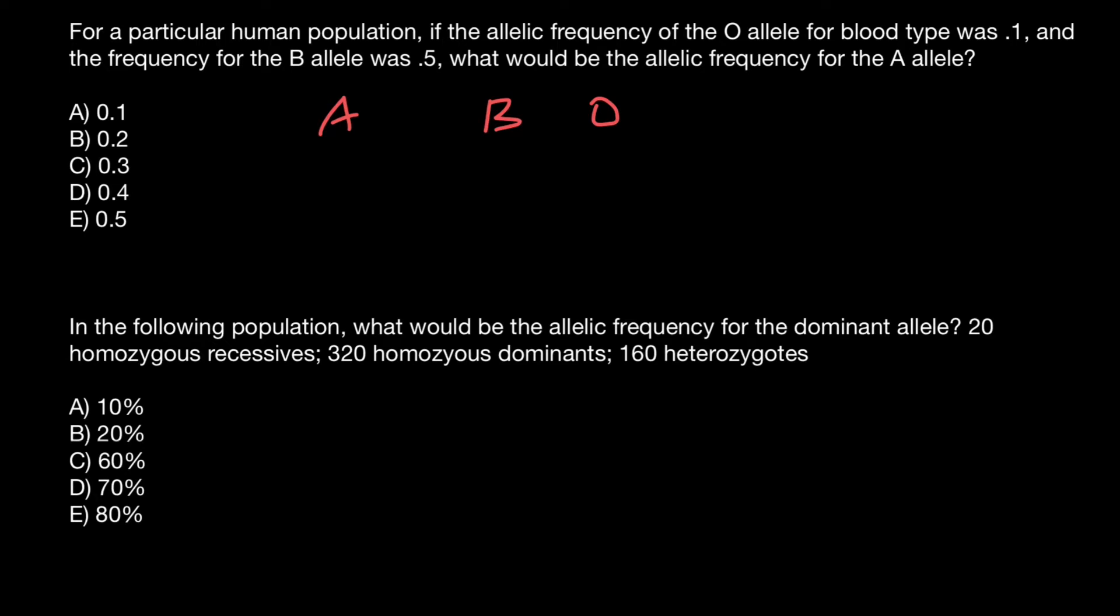If we know the frequency of two alleles, we will find the frequency of the third allele. The frequency of the O allele is 0.1, and frequency of the B allele is 0.5.